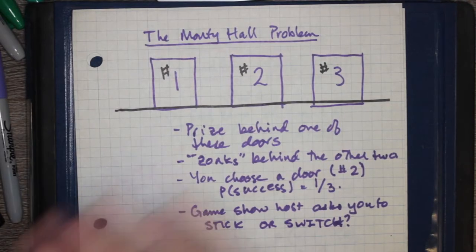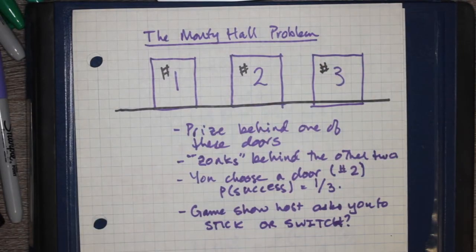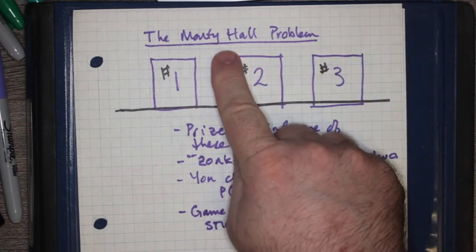I'm going to talk about a famous problem using the product rule for dependent events, and it's known as the Monty Hall problem.